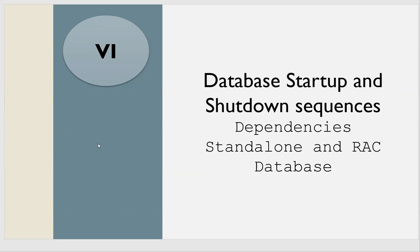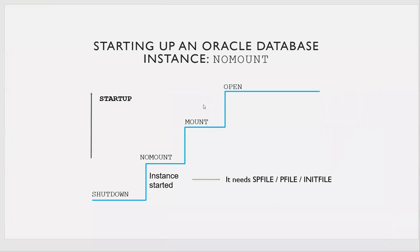A DBA needs to understand the dependencies on standalone and RAC databases for each of the modes and states. Irrespective of whether the database is standalone or RAC, the database will have these modes: shutdown state to no-mount, no-mount to mount, and mount to open.